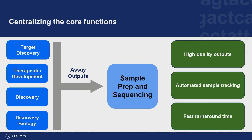Today I'll talk about how we centralized these core functions — instead of taking the final sample prep from each individual group, we collect the assay outputs themselves and then perform, in our sequencing core using our NGS work cell, both sample prep and sequencing in a standardized manner. Our centralization within the Ursula work cell has led to much higher quality outputs because we have higher quality inputs, automated sample tracking that gives us more control and insight into our data through in-process QC and a standardized sample tracking platform, and a much faster turnaround time.